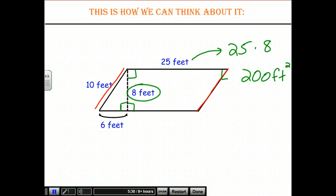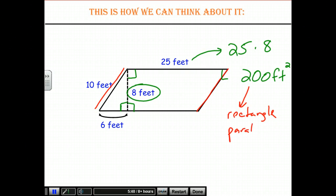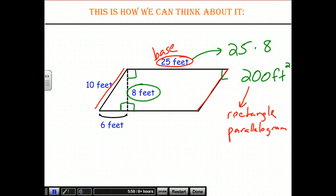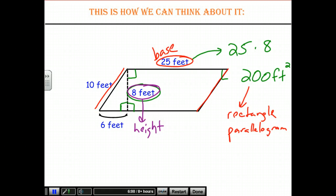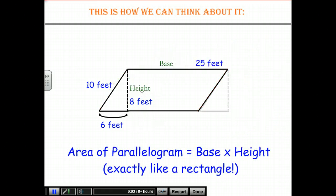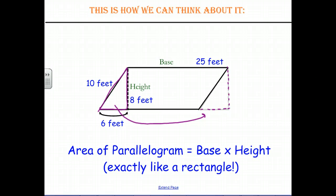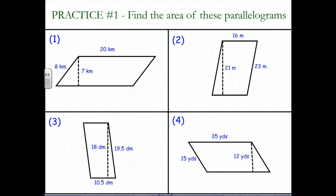We didn't add anything to the parallelogram or take anything away — we just moved a part of it to find the area. Because we used every part of the parallelogram, this is also the area of the parallelogram itself. The base is 25 feet and the height is 8 feet — the distance between the two parallel sides — and so the area of a parallelogram is just base times height, exactly like a rectangle. Pause the video now and find the area of the four parallelograms shown.